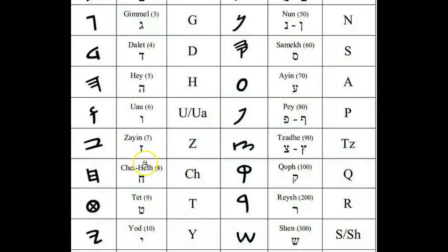Then the next letter is the Hat, or Ket. It's commonly pronounced as the Chet in modern Hebrew. This is how it looks in the Paleo. This letter means a wall or a fence of separation. It can make the CH sound, but it can also be used with the K to make the K sound interchangeably.